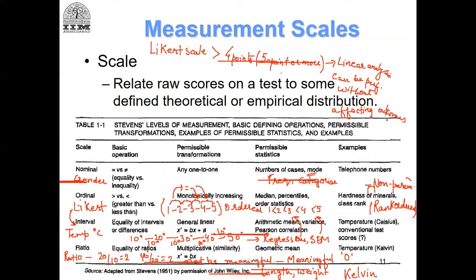Sudhanshu raises a good question: Celsius and Kelvin are two different operationalizations or two different measures of the same concept. One is an interval scale, another is a ratio scale. Celsius is a measure of temperature, and Kelvin is also a measure of temperature — they are two different measures of the same construct, which is temperature.